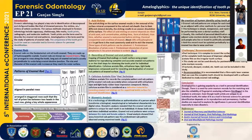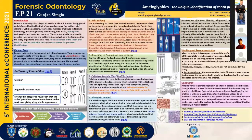There are three main patterns of enamel rods. First is circular. Second is aligned in parallel rows. Third is arranged in staggered rows such that the tail of the prism lies between two heads of the next row, giving a keyhole appearance.